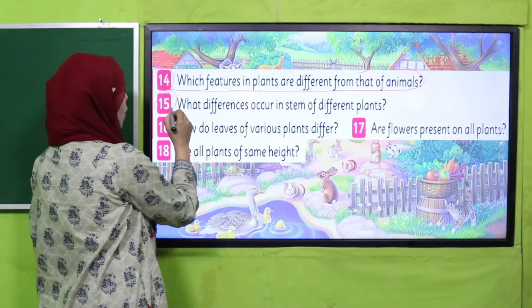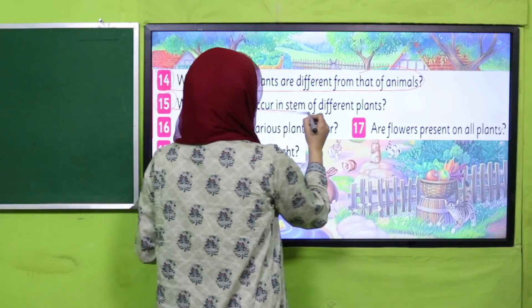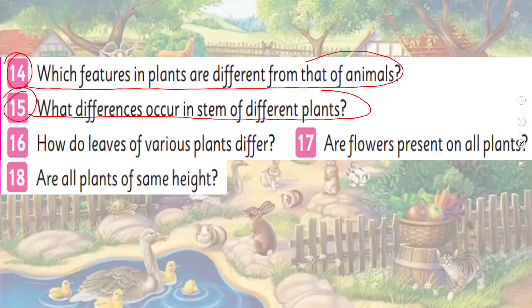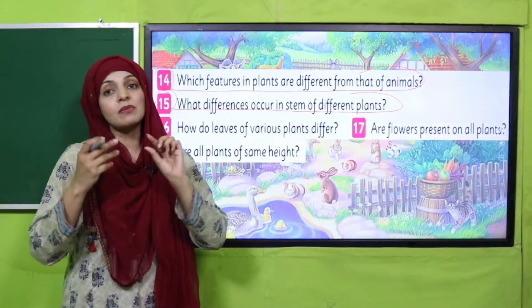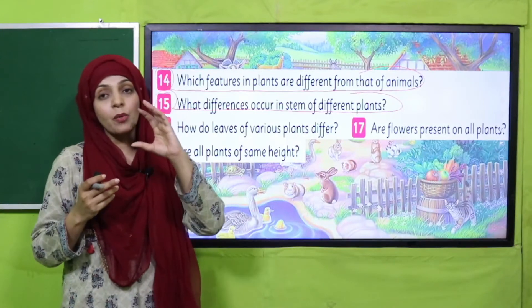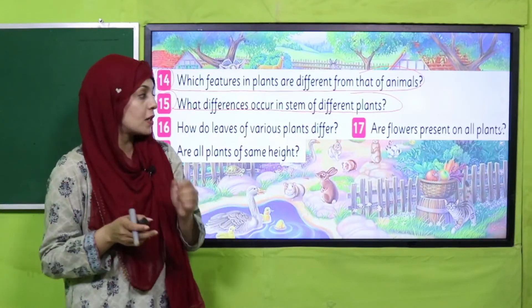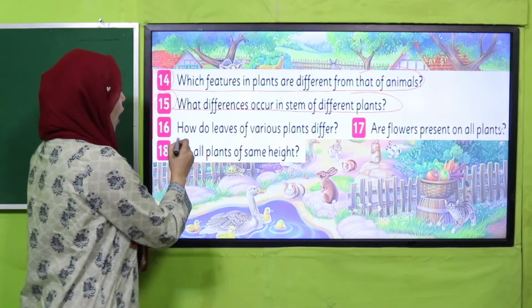Question number 15: what differences occur in the stems of different plants? Some stems are thin and green, some stems are very thick and woody, some stems are very tall, and some stems are very short.